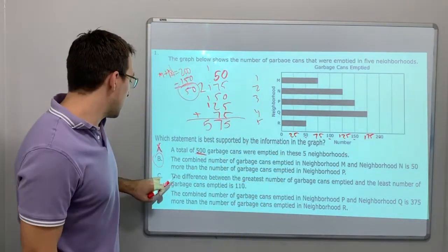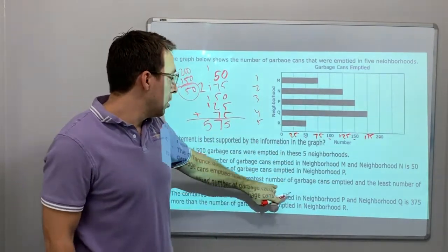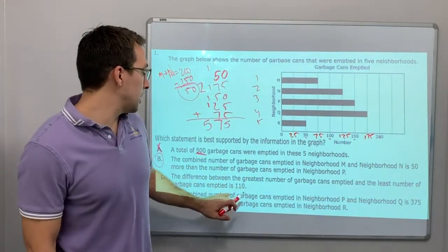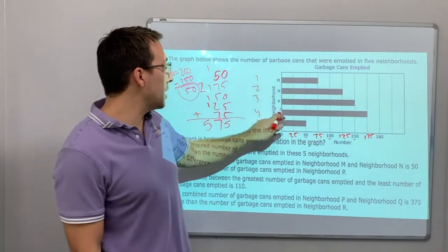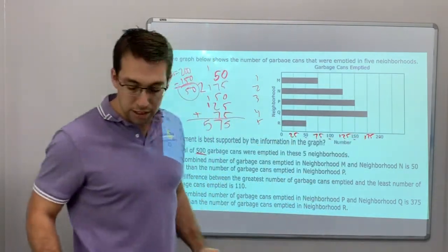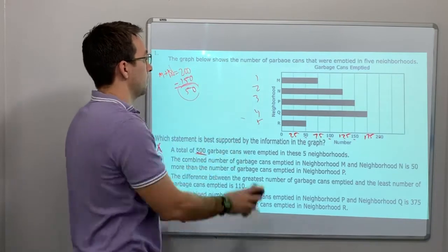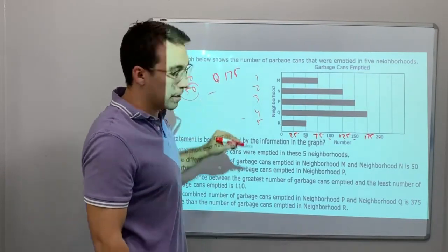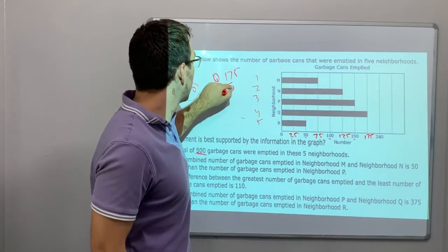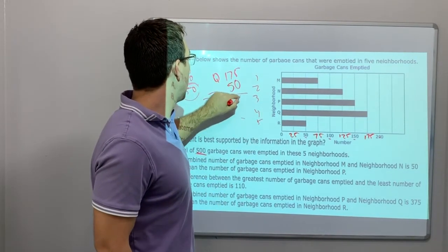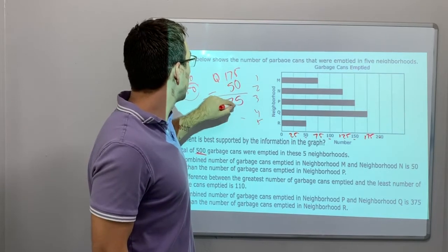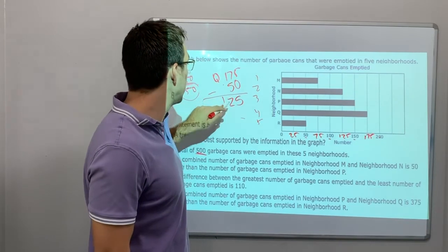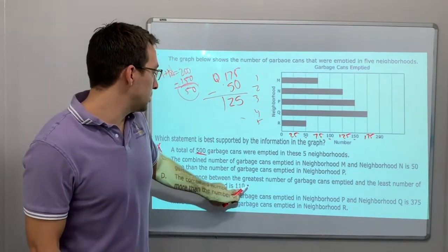Let's check C. The difference between the greatest number of garbage cans emptied and the greatest number of garbage cans is 110. So the greatest is Q. Q is 175. Okay, Q is 175 minus the least is 50. 125.